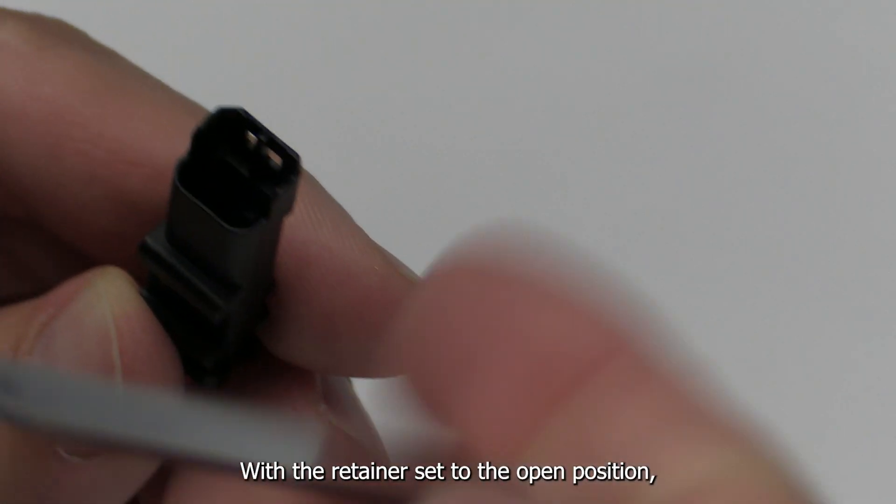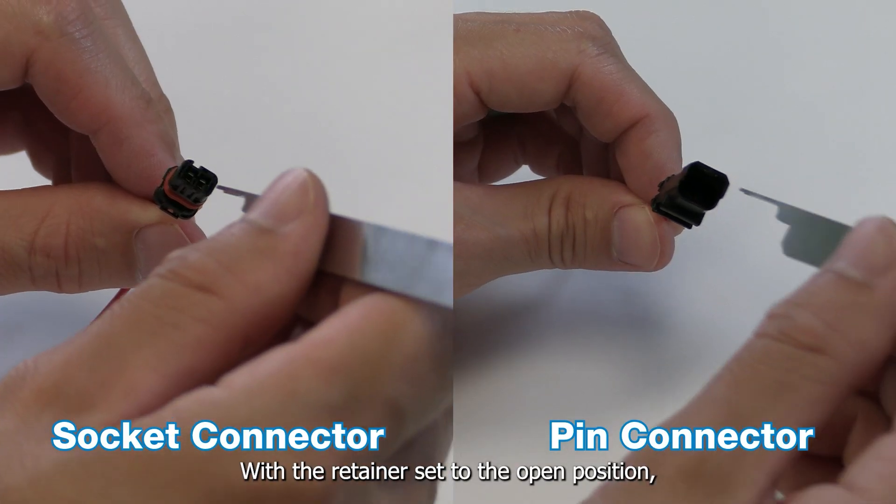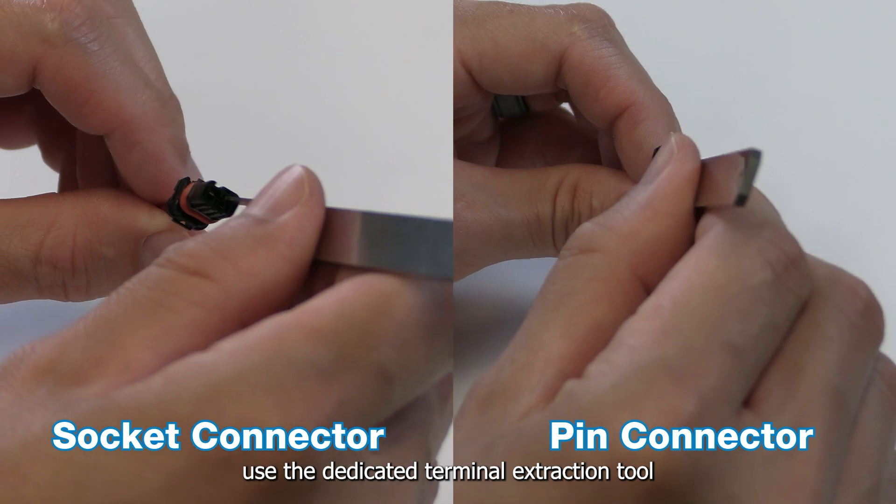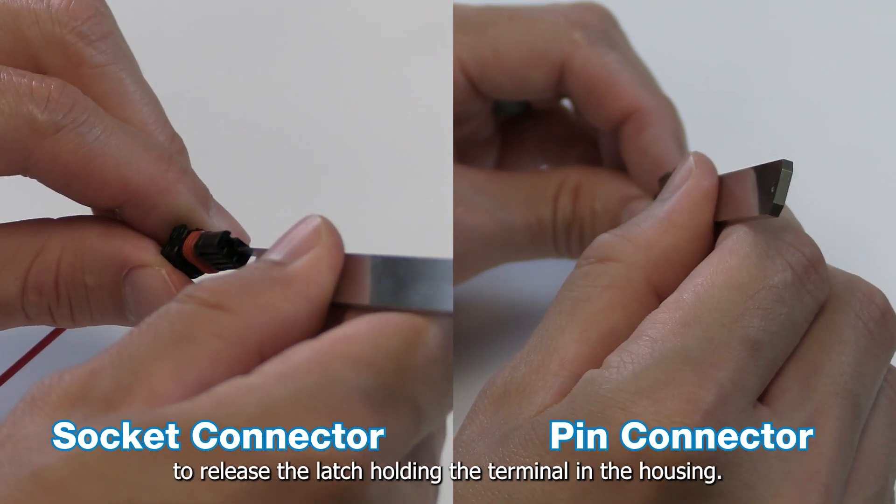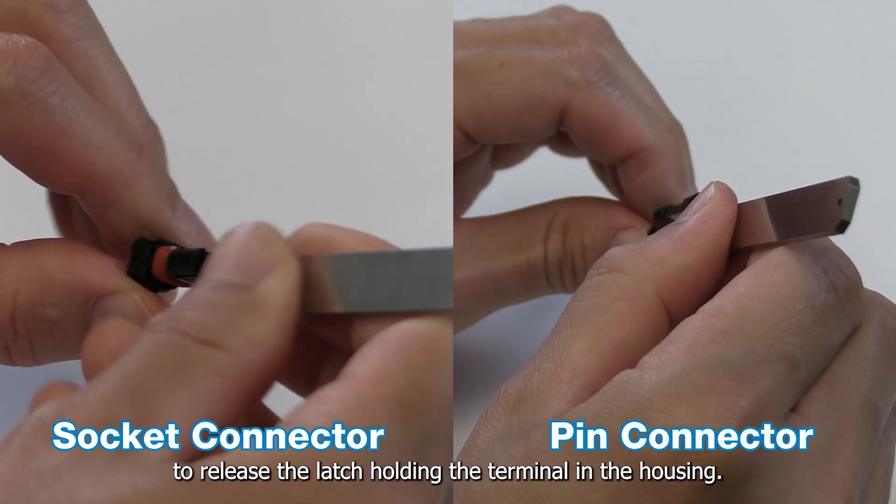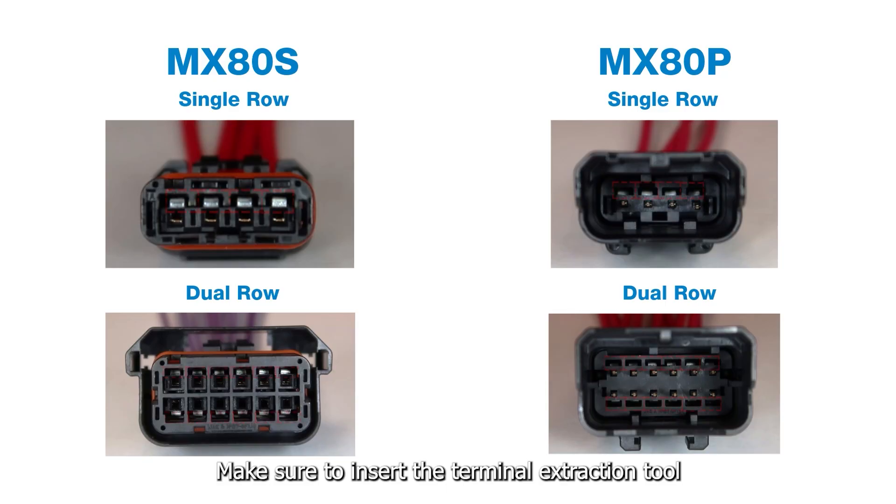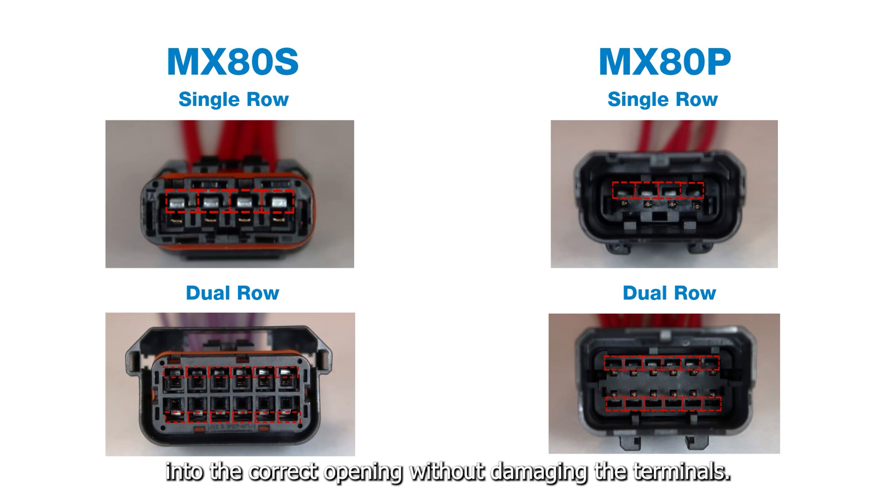With the retainer set to the open position, use the dedicated terminal extraction tool to release the latch holding the terminal in the housing. Make sure to insert the terminal extraction tool into the correct opening without damaging the terminals.